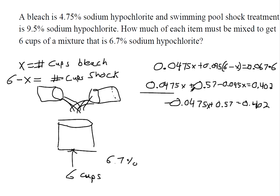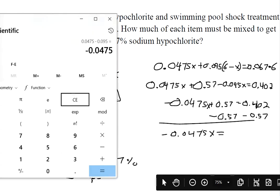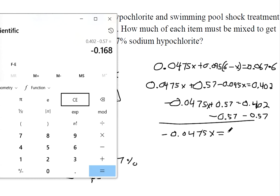I'm still trying to get that x by itself, so let's subtract 0.57 from both sides. We get negative 0.0475x equals 0.402 subtracted by 0.57, that makes negative 0.168.